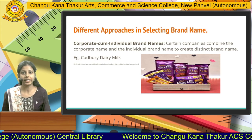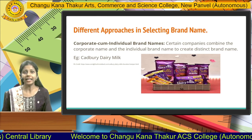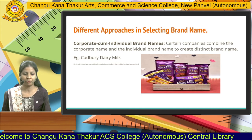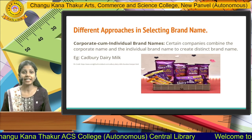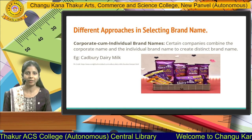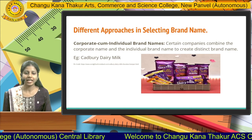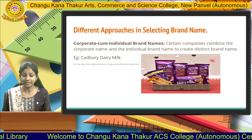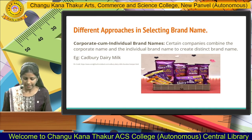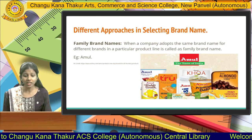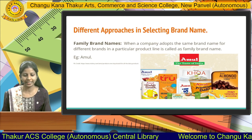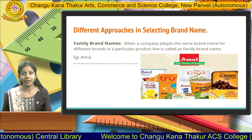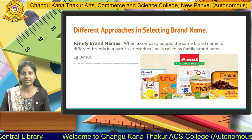Then we have corporate-come-individual brand names — here corporate and individual brand name are combined to create a distinct image. For example, Cadbury Dairy Milk Silk, Cadbury Dairy Milk Oreo — the company name and individual product characteristics are simultaneously promoted. Then we have family brand name — here a company adopts the same brand name for different products. For example, Amul Milk, Amul Lassi, Amul Butter — the product line is specialized under that family name, Amul.